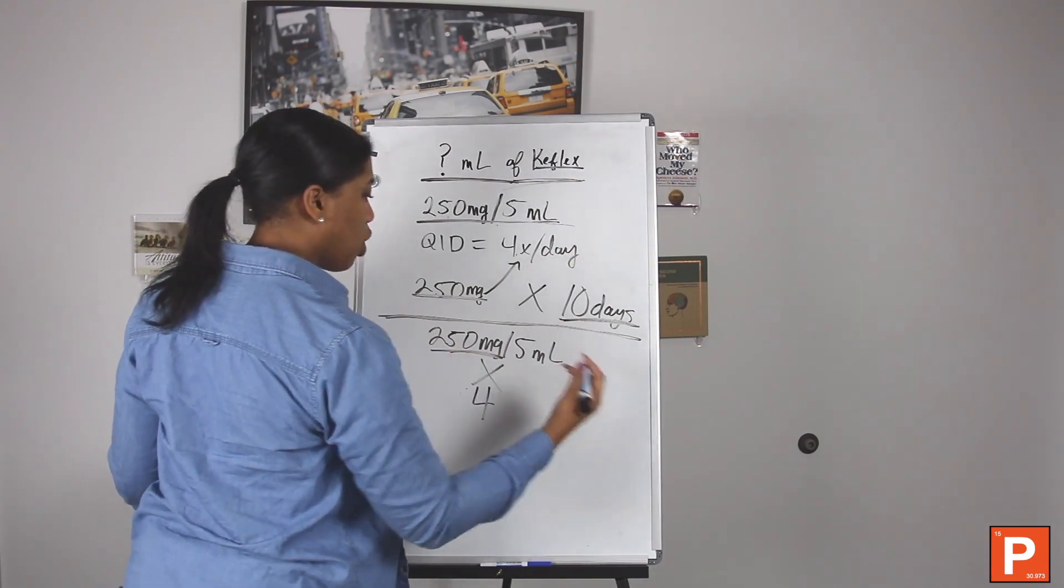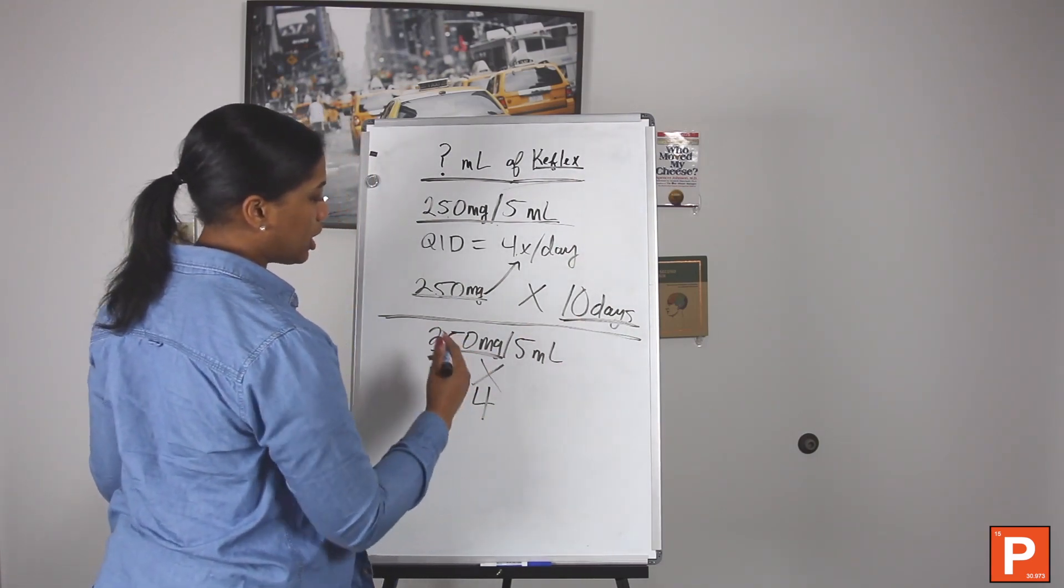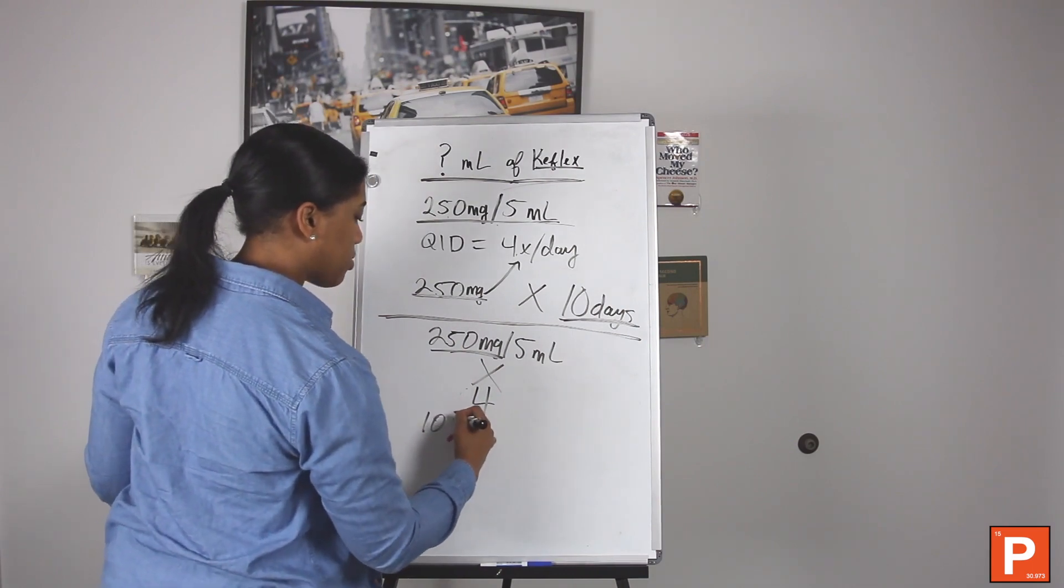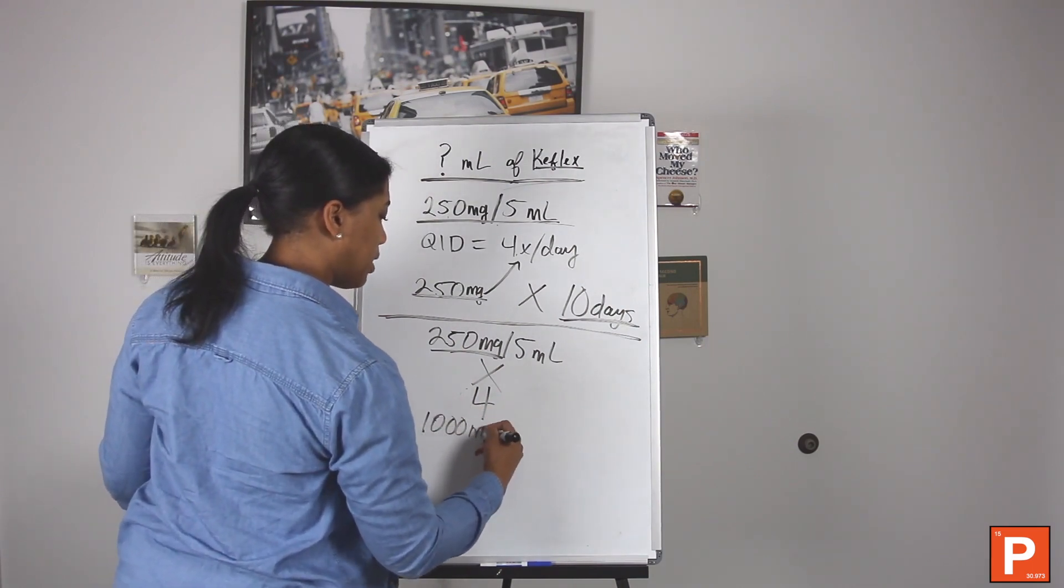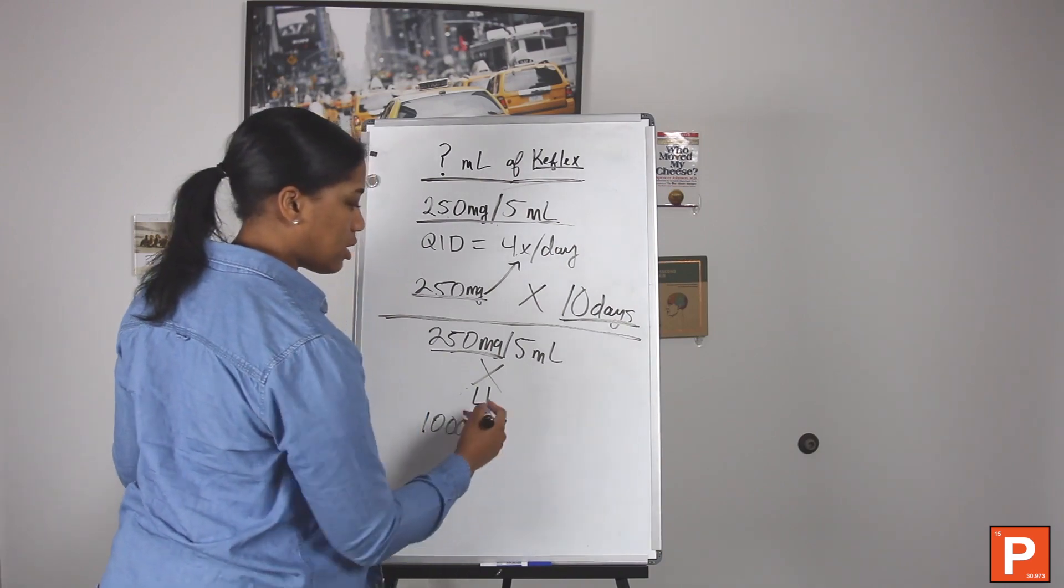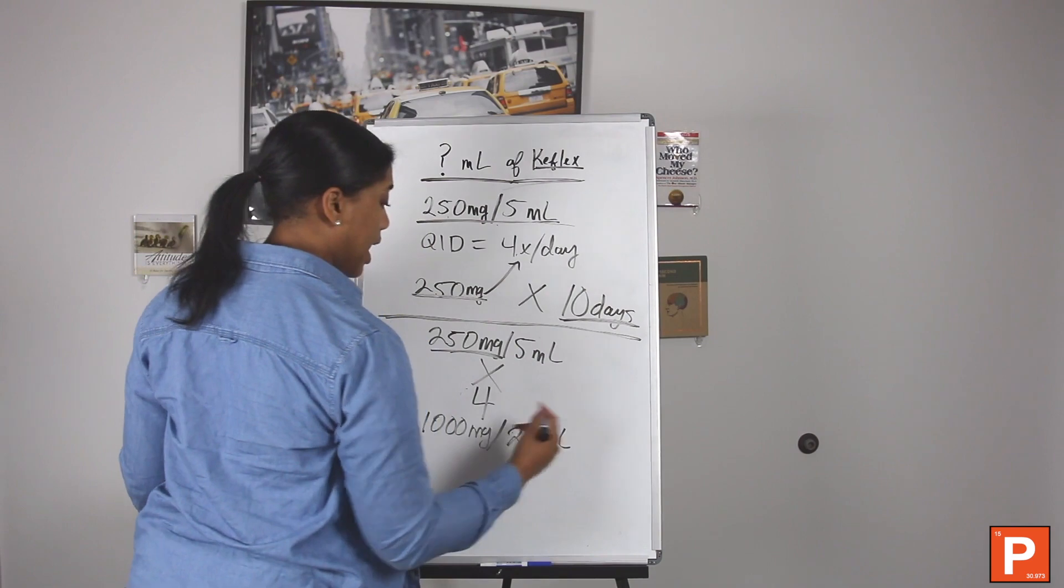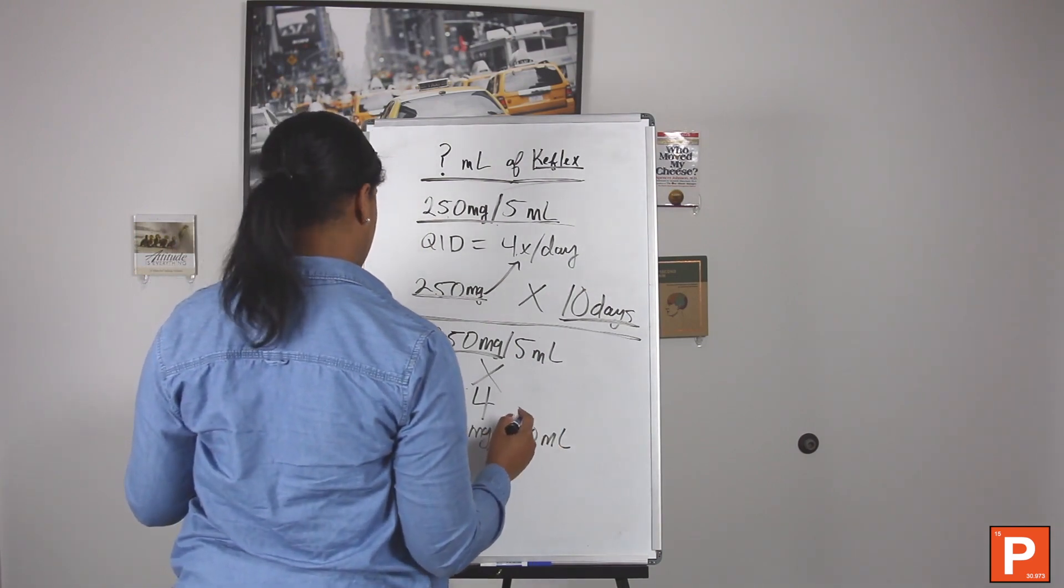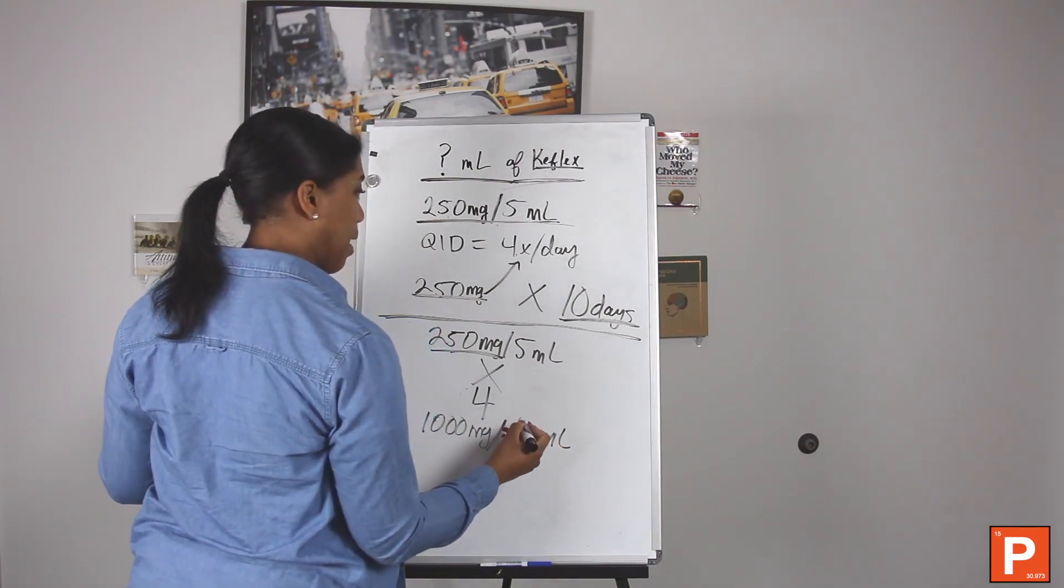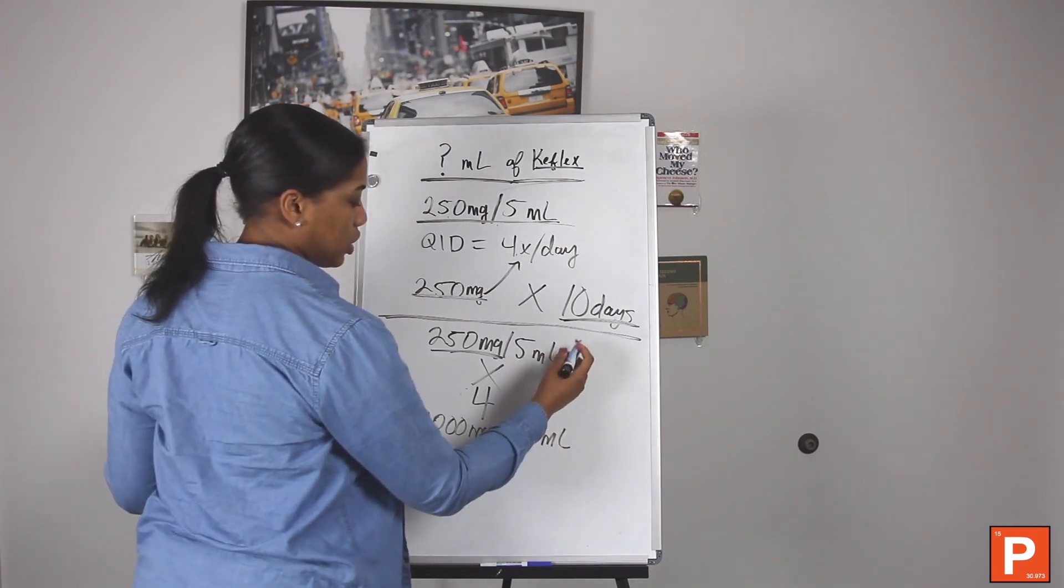So once you do that math, you should get 1000 milligrams for every—let's see, four times five—20 milliliters. Now they also said that it is for how many days, right? So we're not quite finished yet.